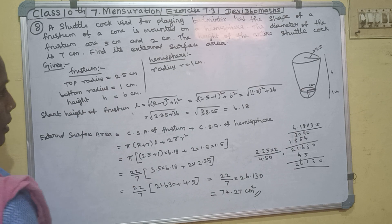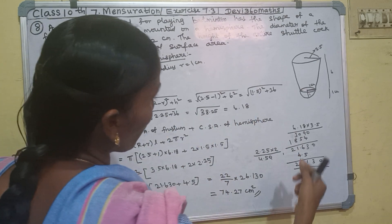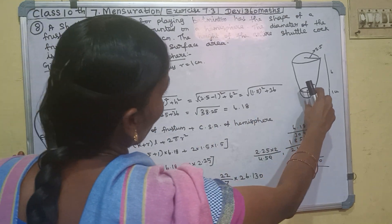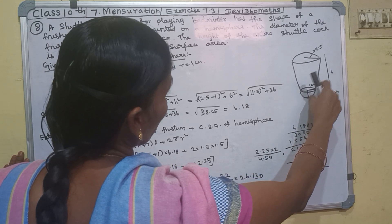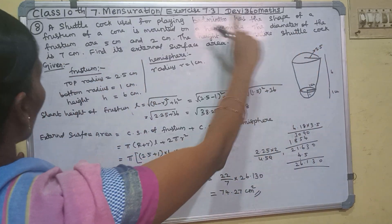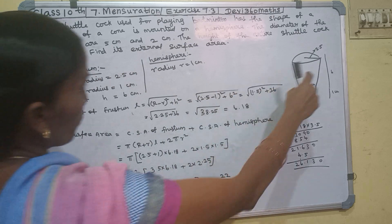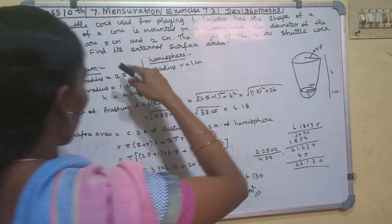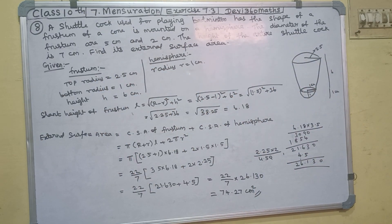The height of the frustum is 6 cm, so we are going to calculate this distance. The entire shuttlecock height is 7, so we have 1 centimeter radius minus to get the height of 6 centimeters.